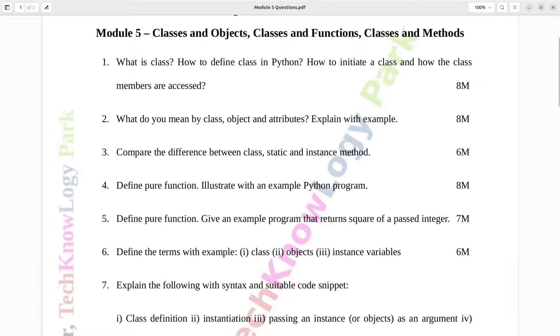Question number five. Define pure function. Give an example program that returns square of a past integer. Seven marks.